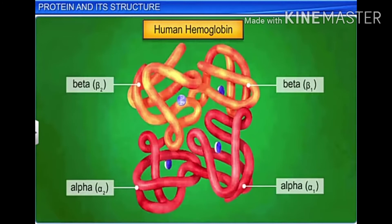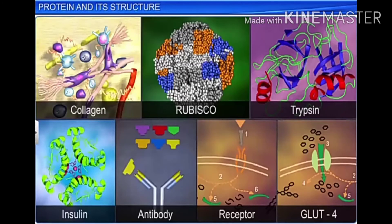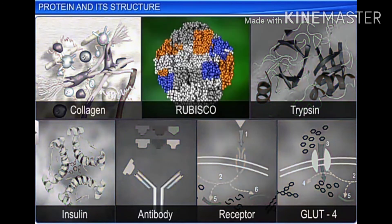Some of the most common proteins we come across are collagen, RUBISCO, trypsin, insulin, antibodies, receptors, and GLUT-4. Let's learn more about each of these proteins.